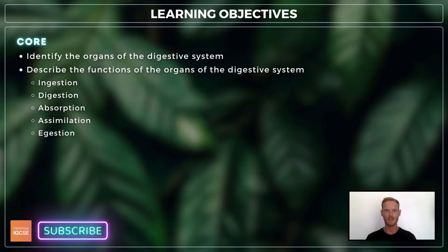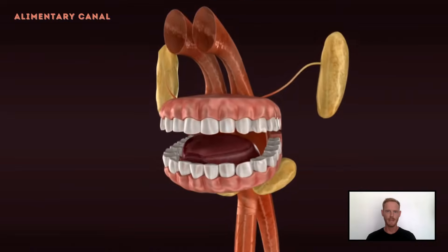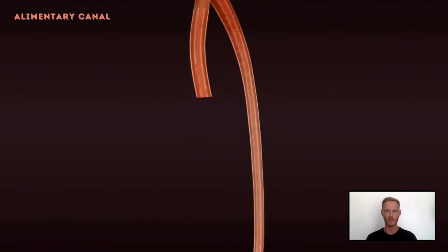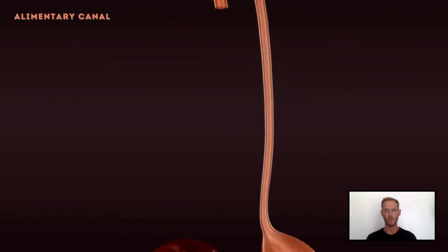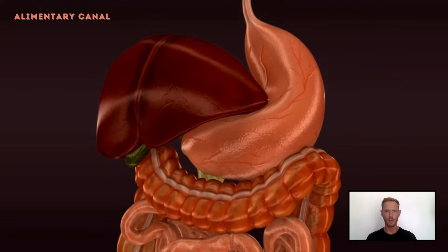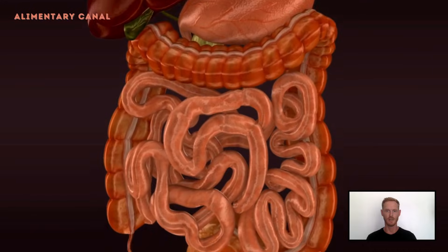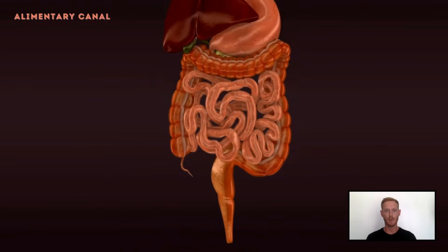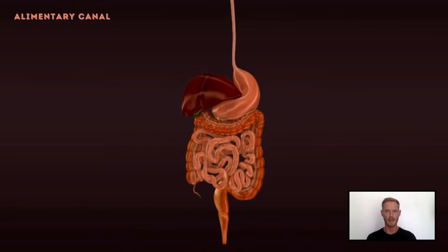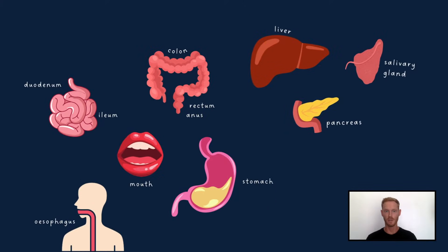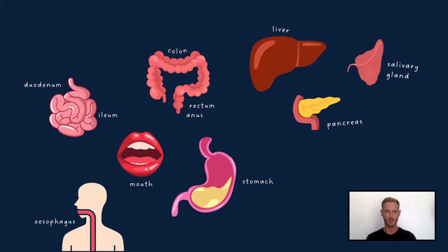The alimentary canal is a tube that runs through the entire body, within which food is digested. The organs of the alimentary canal work together to break down food into small soluble molecules that can easily be taken up by the bloodstream and utilised. You need to be able to identify the main organs of the system, and a few associated organs as well.